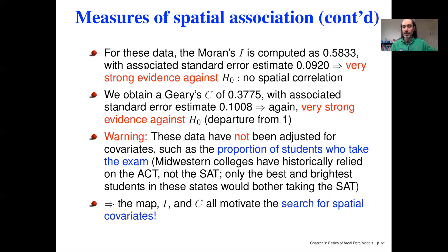Returning to the map of spatial patterns of SAT scores across the U.S., Moran's I — which should be zero under no spatial relationship — shows a strong positive correlation of almost 0.6, with a standard error of about 0.1. This gives us fairly strong evidence against the null hypothesis of no spatial correlation.